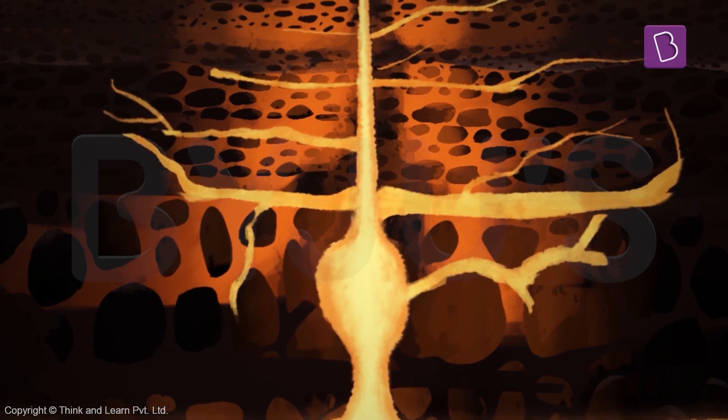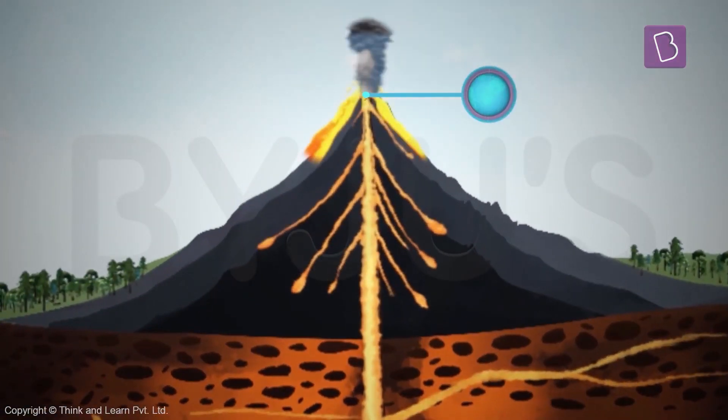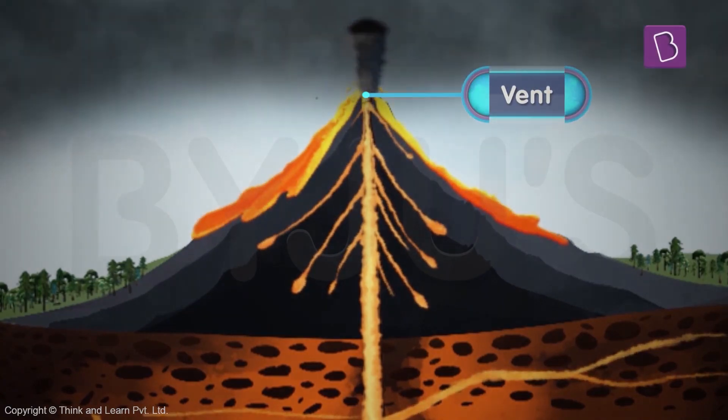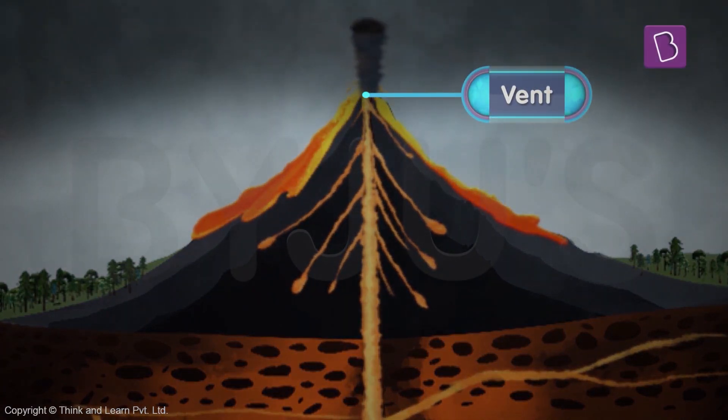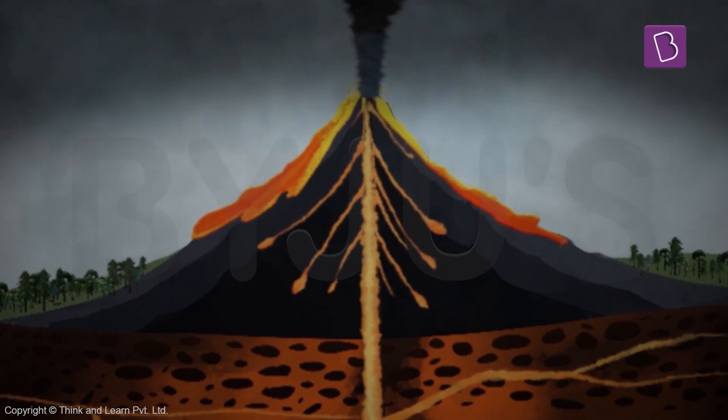On the other hand, the vent acts as the mouth of the volcano. The hot magma has another name once it reaches the surface of the earth. It is then called lava.